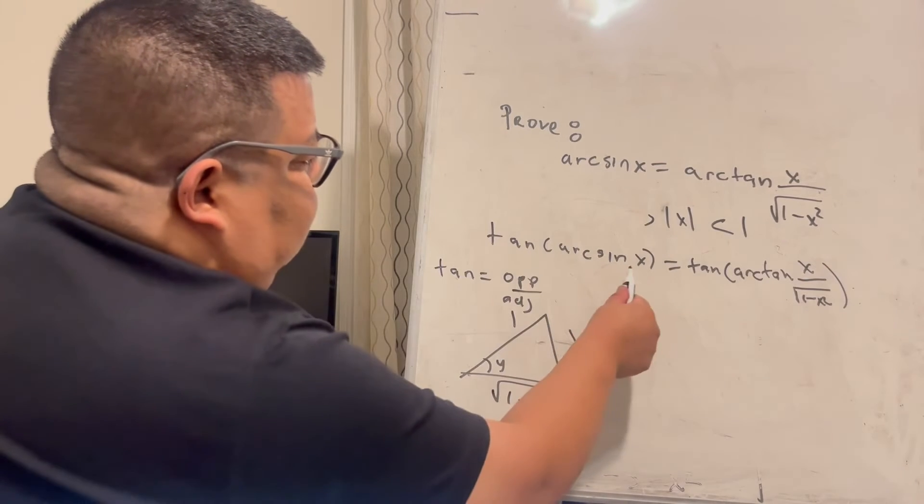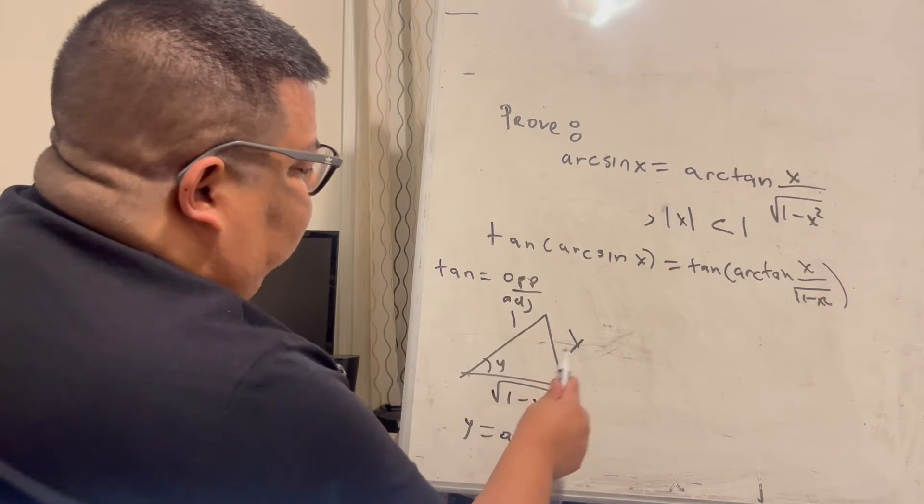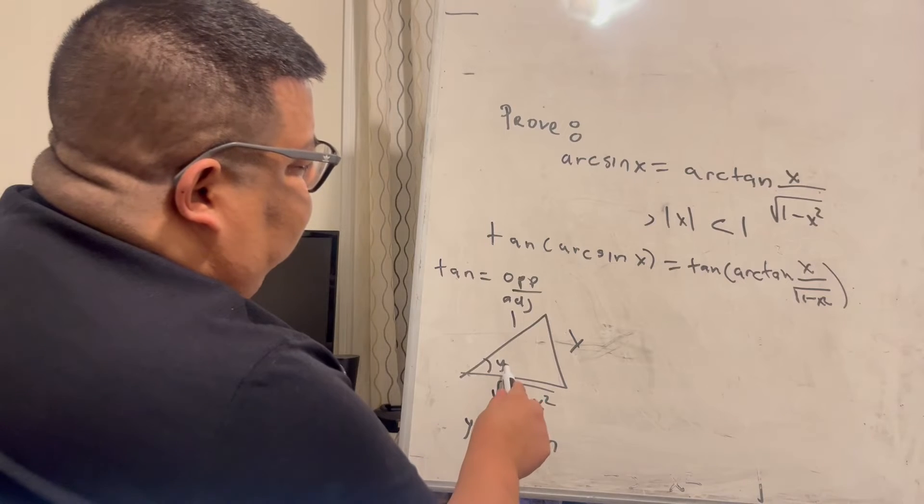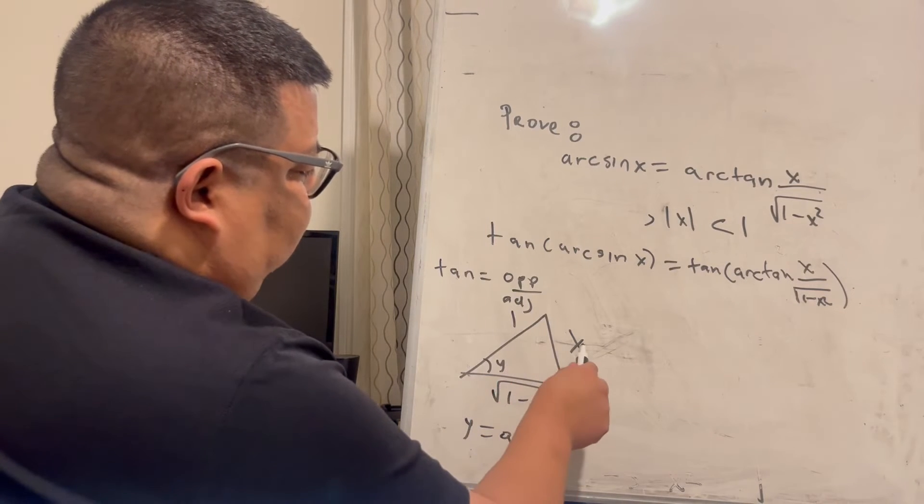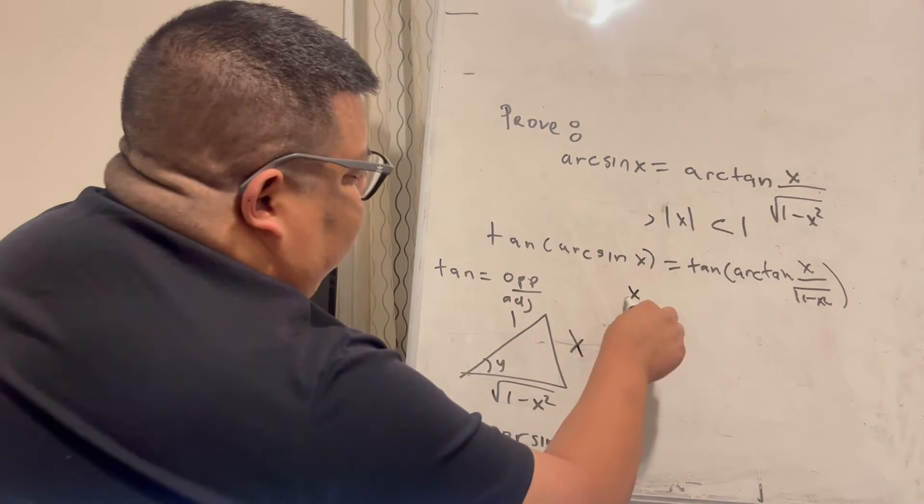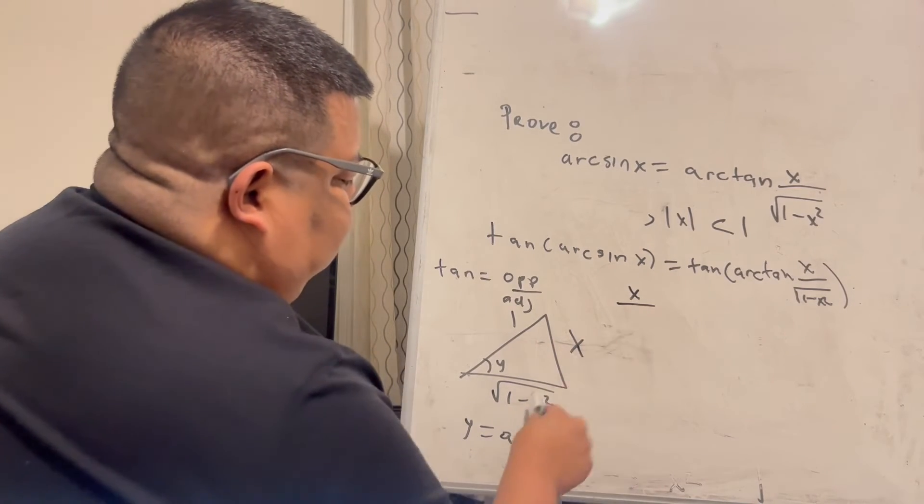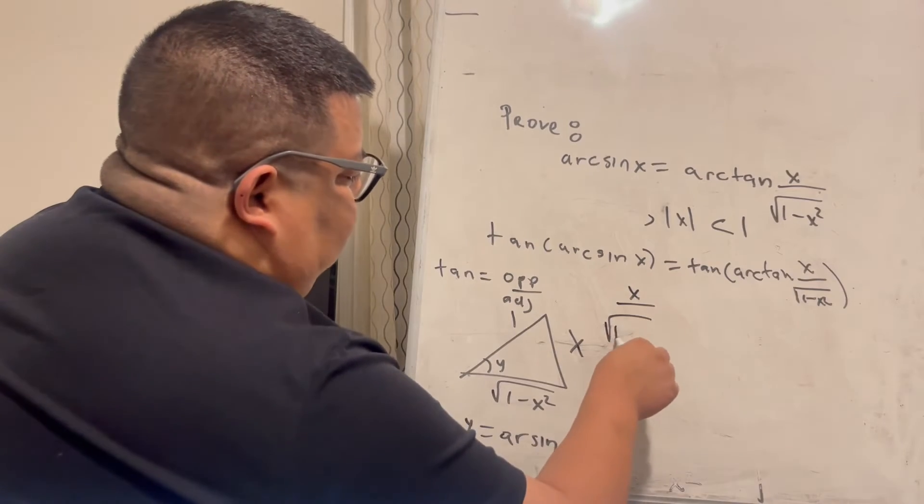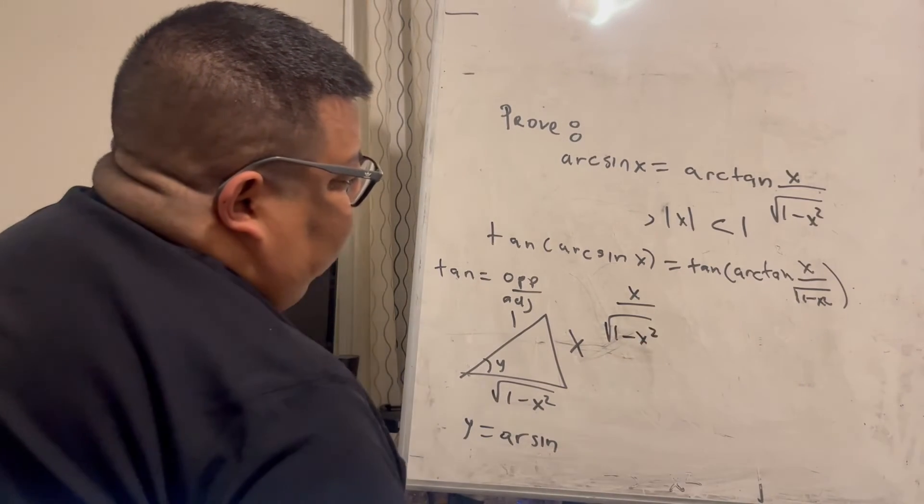That means that this tangent, if I take the arcsin, this angle here, is going to be opposite. I mean that the left side is x, or opposite over adjacent, which is square root of 1 minus x squared.